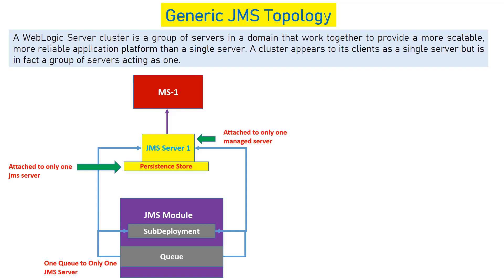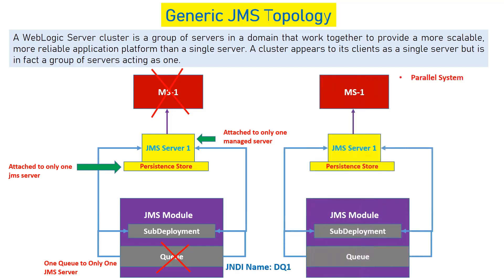This is why we call it a singleton service. To achieve clustering of singleton services we have the Uniform Distributed Queue — this is the concept for a queue. If you talk about topics, you would have a Uniform Distributed Topic, but that is altogether different. Here we are talking only about queues. So to achieve clustering we use a Uniform Distributed Queue, which we will see in the next slide. If you want high availability in this architecture and your managed server crashes or your queue is not responding, your entire JMS system will break down. For that you may need a parallel architecture.